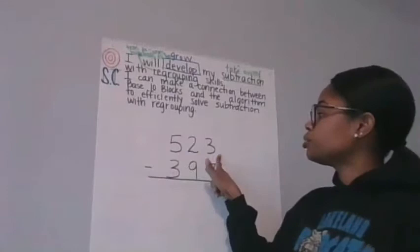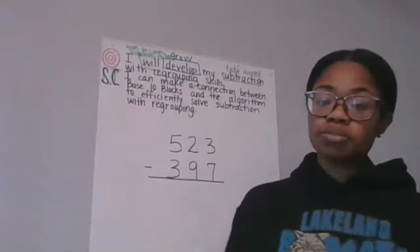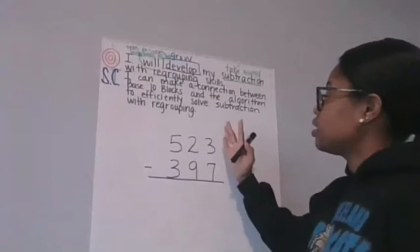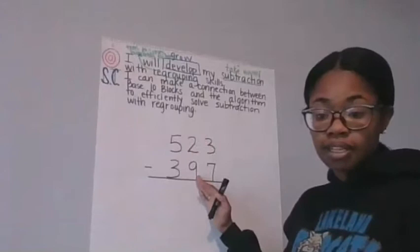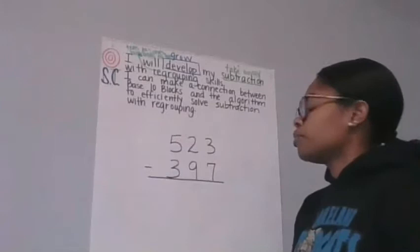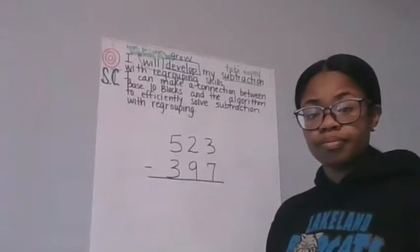So our problem today is 523 minus 397. Now, while we are subtracting, we want to make sure in our algorithm that the ones digits are lined up, the tens digits are lined up, and the hundreds digits are lined up. So let's get started.